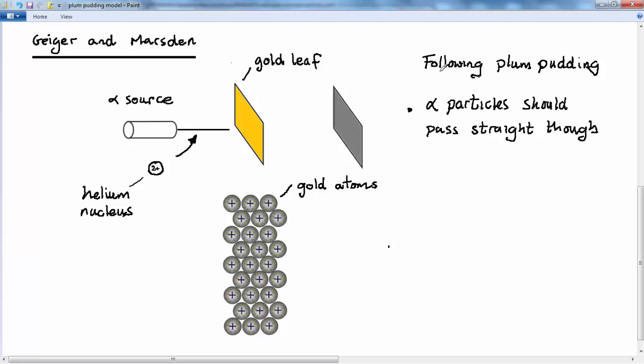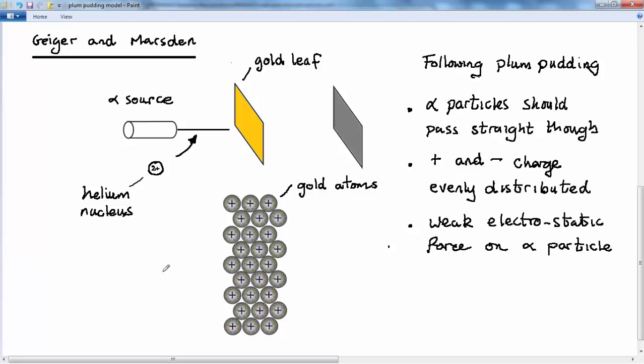Just to summarize then, following the plum pudding model, the alpha particles should pass straight through the gold leaf because the positive and negative charge in the leaf is evenly distributed throughout its structure, and that results in a weak electrostatic force acting on the alpha particle. Following the plum pudding model, they expected the alpha particles to shoot straight through that gold leaf in pretty much the same way as a cannonball would pass through some tissue paper.